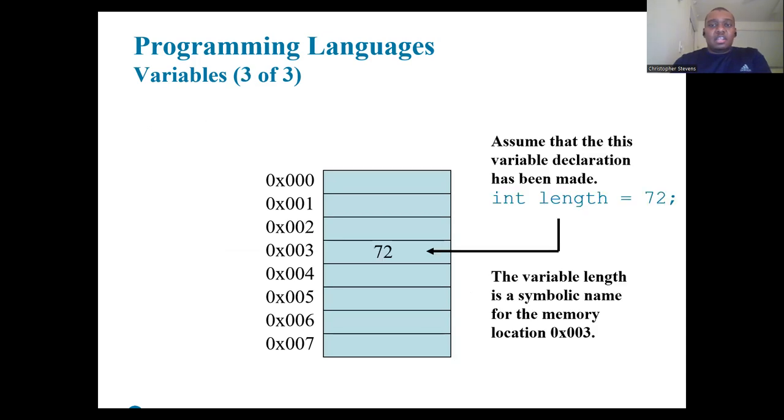The Java Virtual Machine, or JVM, actually decides where the value will be placed in memory.